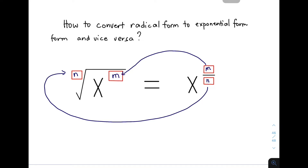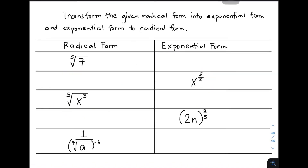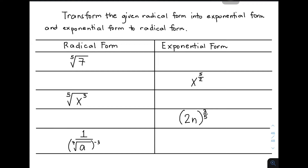So let's start with the conversion. Transform the given radical form into exponential form and exponential form to radical form. Our first example to be converted from radical to exponential form is the fifth root of 7. What will happen here is that the radicand 7 will become the base of your exponential form. For the exponent, this index 5 will be the denominator, and since we don't have an exponent on the radicand, this is 1. So the exponential form of the fifth root of 7 is 7 raised to 1 over 5.